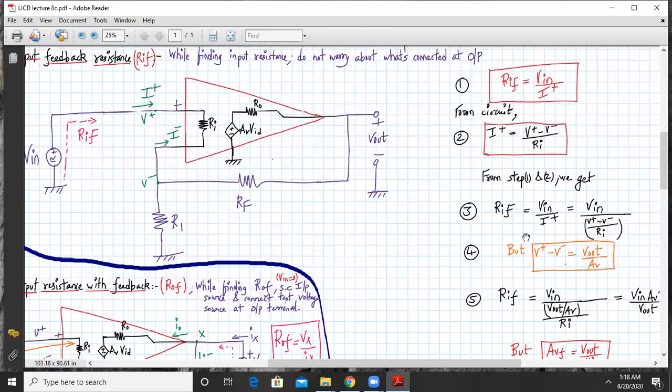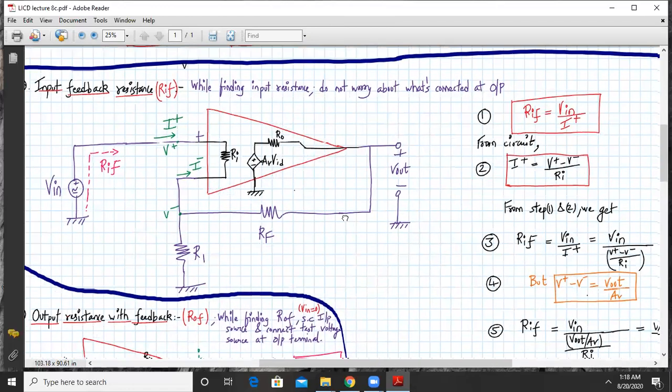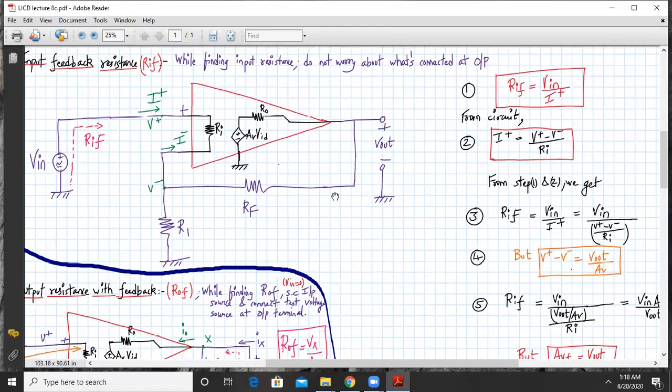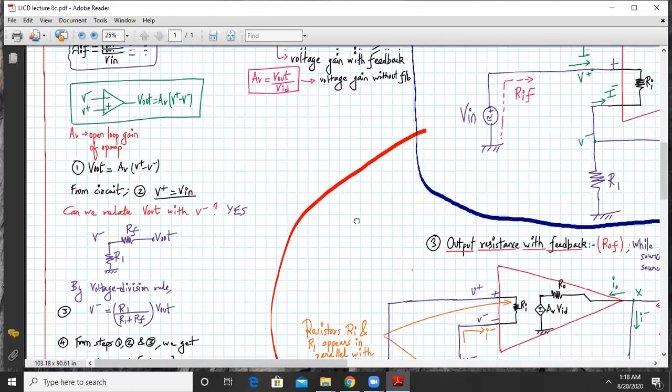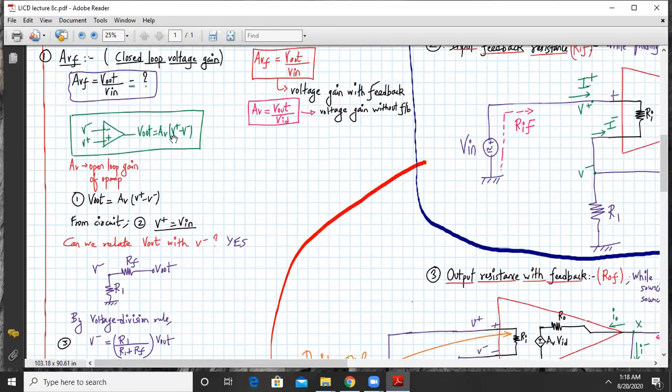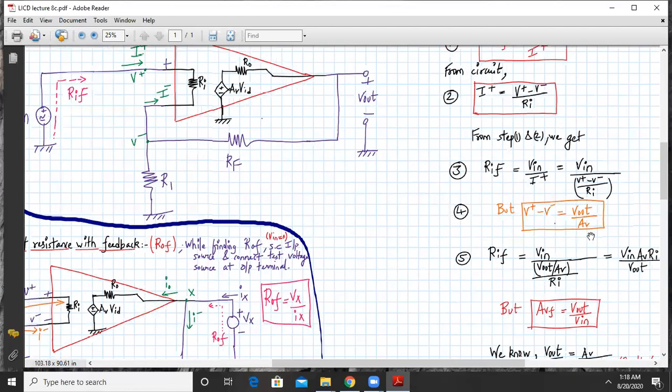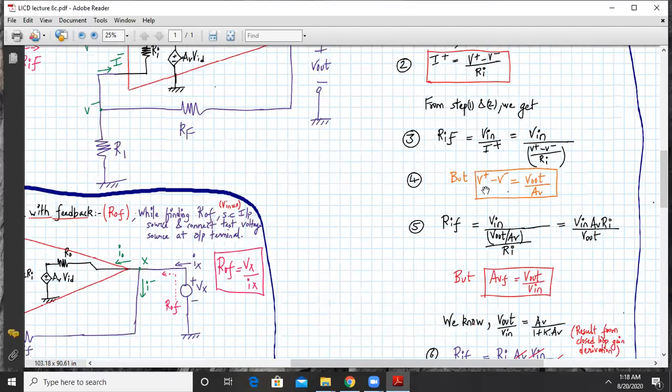But V plus minus V minus can also be written as V out upon AV. Why is that? Because V out will be equal to AV times V plus minus V minus for an open loop op-amp. So we substitute this V plus minus V minus here. We'll get V out upon AV divided by RI. So this AV and RI will come up.